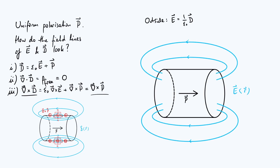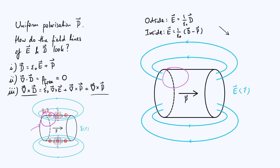Inside the electret we must use the full equation: E = (D − P)/ε₀. The best way to figure out what this means for the field shape is by using vector addition diagrams. Consider a region on the left side of the interior: from the D field line diagram, the D vector there points roughly down and to the right.